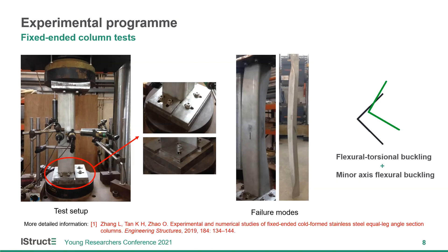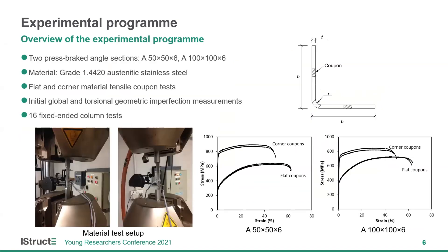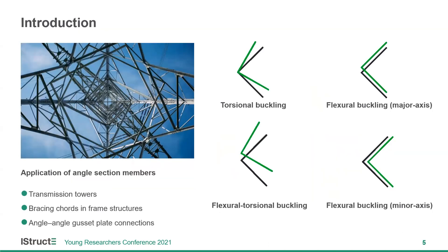One more question: regarding applications, we know mild steel angles are widely used in transmission towers. Where is the main application for this research on stainless steel angle sections — where do you see it bringing benefits? Because angle sections have very simple cross-section shapes, they are widely used in connections and bracing cords in frame structures.